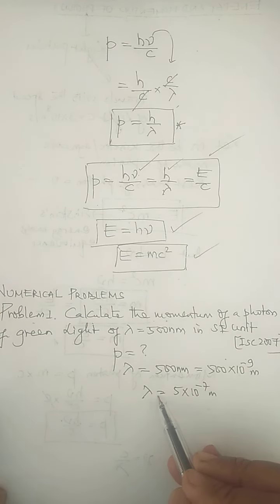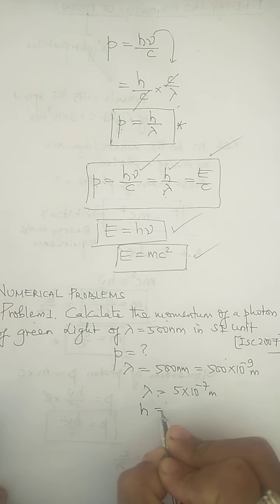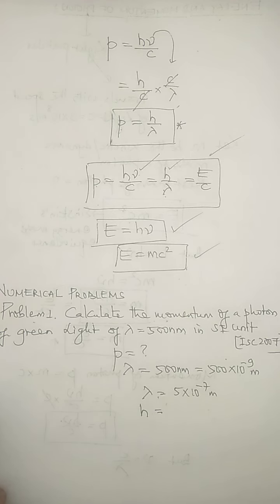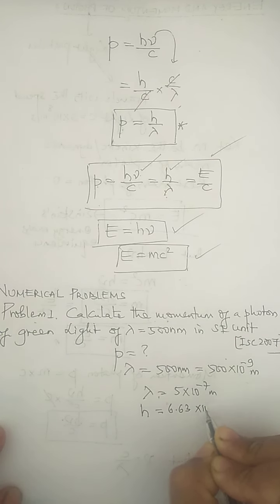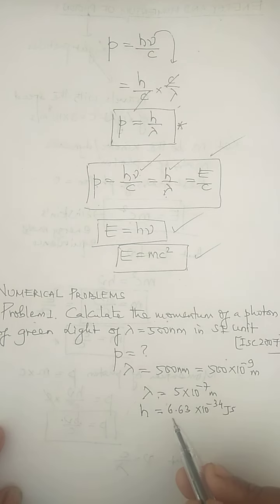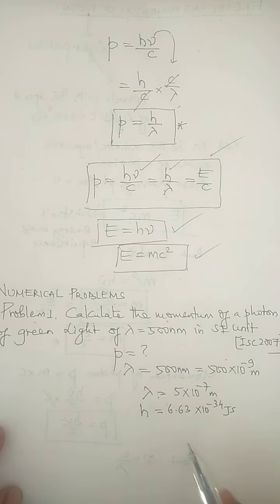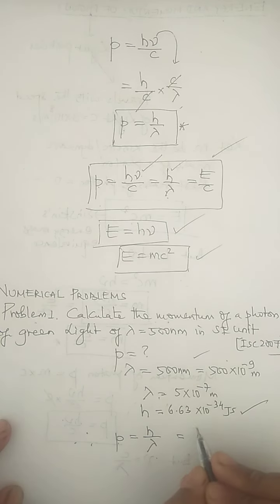Since wavelength is known, we use p = h/λ. The value of h (Planck's constant) is not mentioned in the question, but we always take it as 6.63 × 10⁻³⁴ J·s. In examinations, the value of this constant will be given. We typically use 6.63 × 10⁻³⁴ J·s.